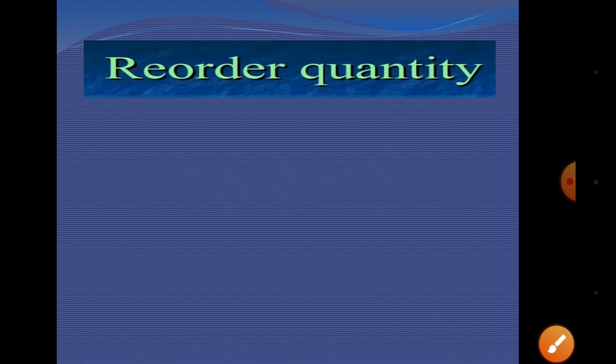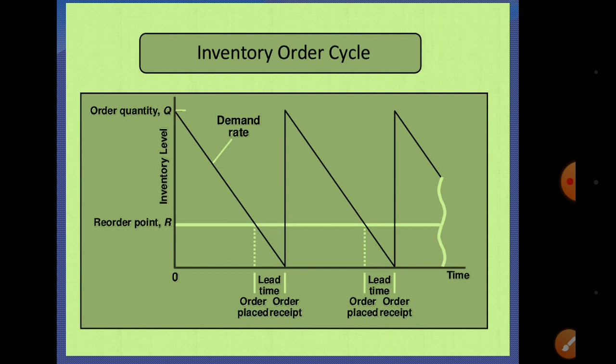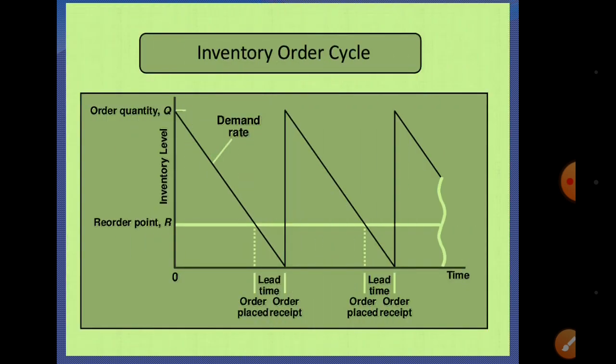Now reorder quantity is the quantity of items to be ordered so as to continue production without any interruption or failure. Reorder level quantity equals safety stock plus usage rate multiplied by lead time.